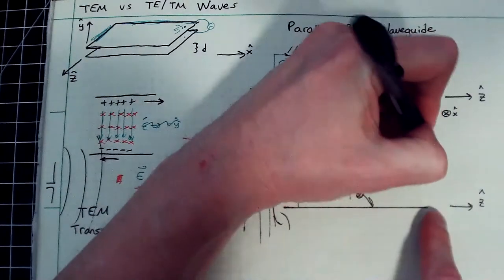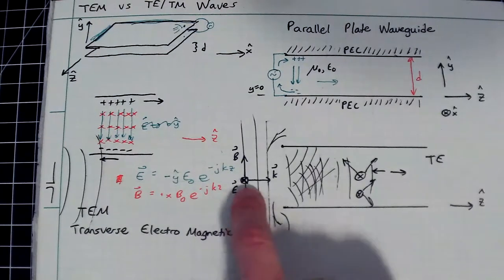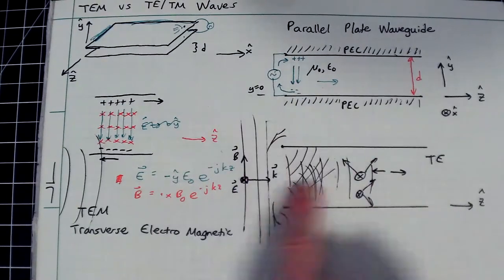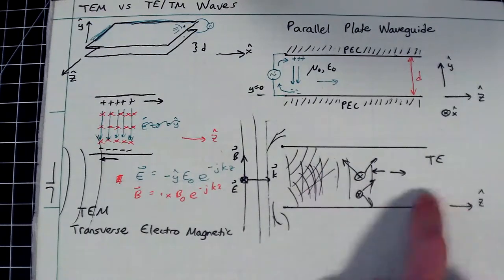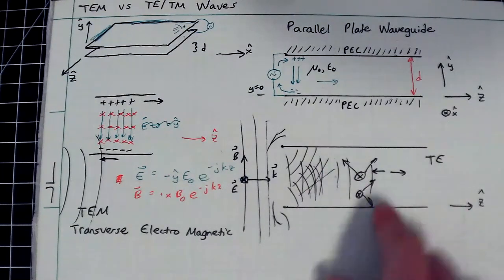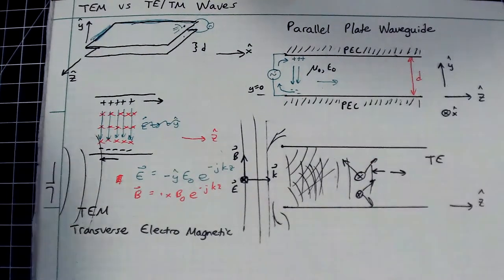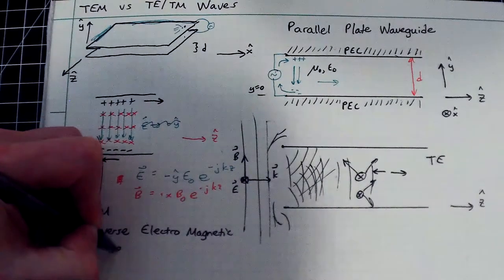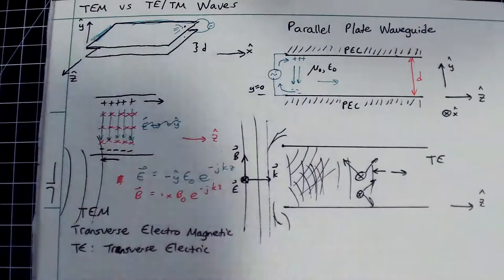In this situation you would say it is transverse electric but not transverse magnetic — TE. The electric field still points in the same direction, but because the wave starts bouncing around, parts of the magnetic field can now go into or away from the direction of propagation, varying in intensity from Y=0 to Y=D. This is the notion of TE: transverse electric, but not transverse magnetic.